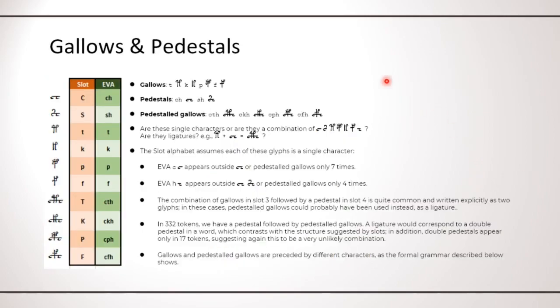The first point is about these glyphs, which are usually called gallows, pedestals and pedestal gallows. Are these single characters, are they a combination of simple characters, or are they ligatures? In the slot alphabet, I assume each of these glyphs is a single character, for the reason that you see summarized in these bullet points.